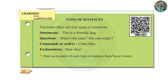Learning about language — we can find English grammar. We can take a particular type of sentence. First we have a statement. This is a friendly dog — it begins with a capital letter. Then we have a question: What's the time? Where is it? Are you ready to prepare?